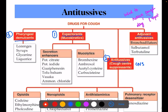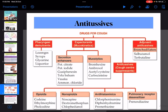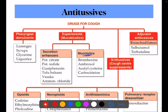Expectorants have two sub-classifications: secretion enhancers (mucokinetics) and mucolytics. Mucokinetics help move secretions out, while mucolytics help break down secretions. Examples of mucokinetics include potassium citrate, potassium iodide, and guaifenesin. Examples of mucolytics include bromhexine, ambroxol, and acetylcysteine. CNS-acting antitussives include opioids, non-opioids, antihistaminics, and pulmonary receptor desensitizers.